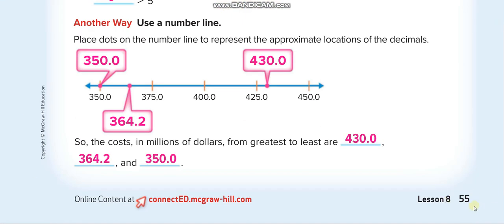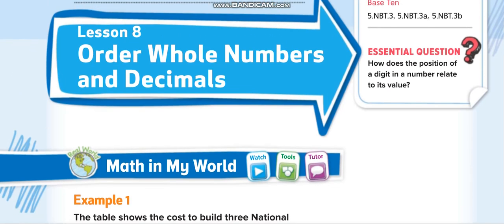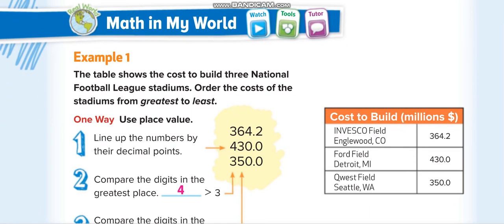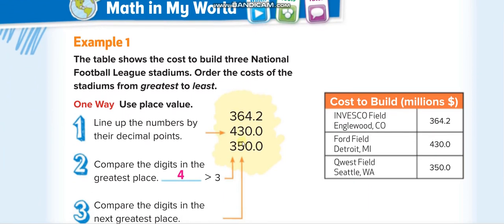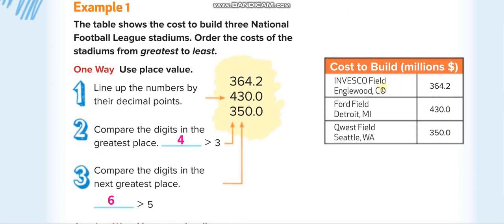The page number is 55. In this lesson we will order whole numbers and decimals. They give us three numbers in a table — the table shows the cost to build three National Football League stadiums. Order the costs of the stadiums from greatest to least.